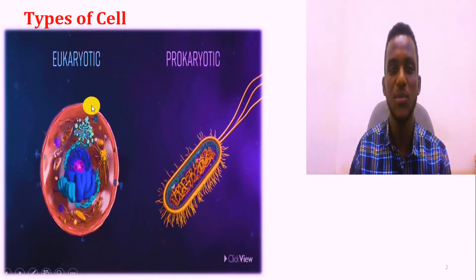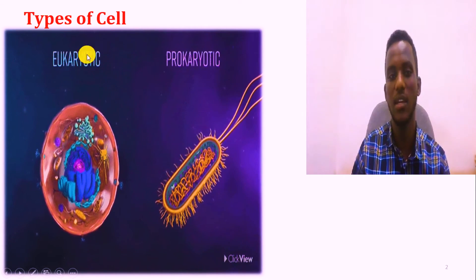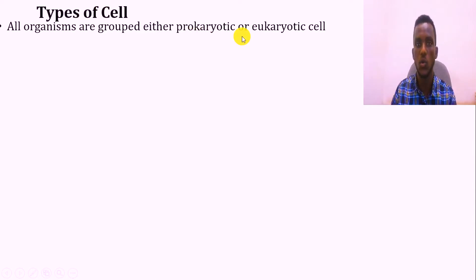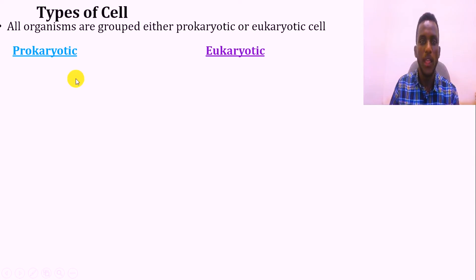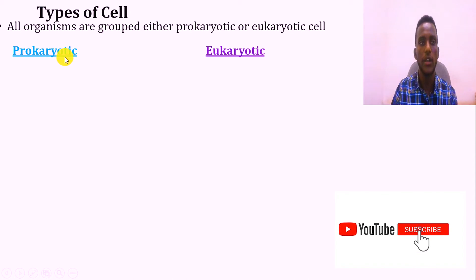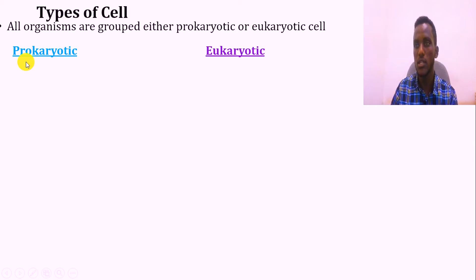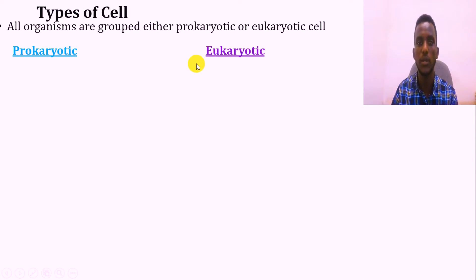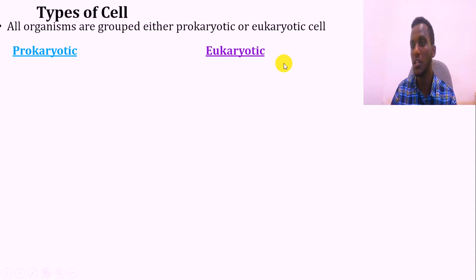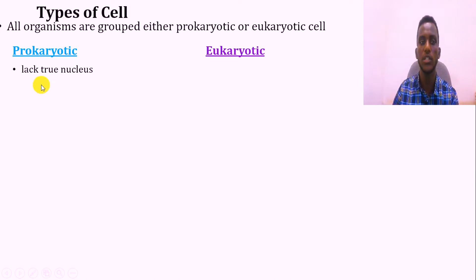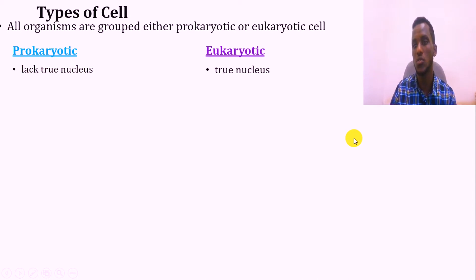As you observe here on the screen, all types of cells are classified into two: one is prokaryotic and the other is eukaryotic. If you have a prokaryotic cell, 'pro' means false and 'karyotic' means nucleus - so prokaryotic means false nucleus, which means they do not have a nucleus. In case of eukaryotic cell, 'eu' means true and 'karyotic' means nucleus, so a eukaryotic cell is a true nucleus. A prokaryotic cell lacks a true nucleus, and a eukaryotic cell consists of a true nucleus.